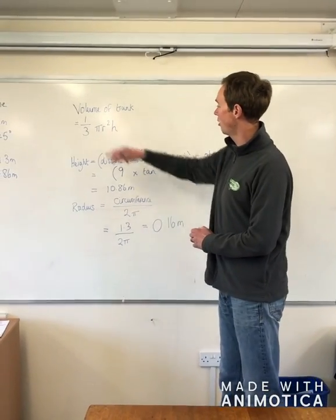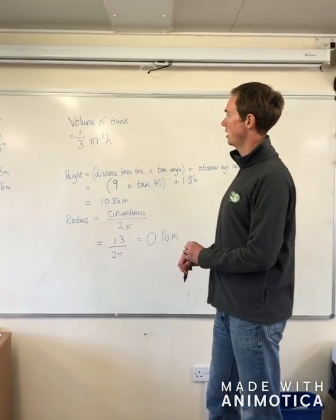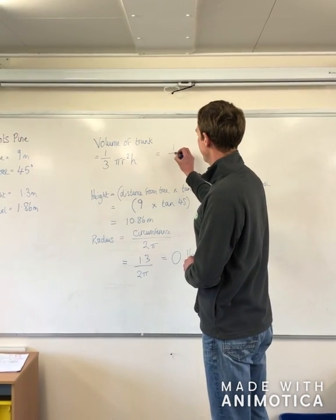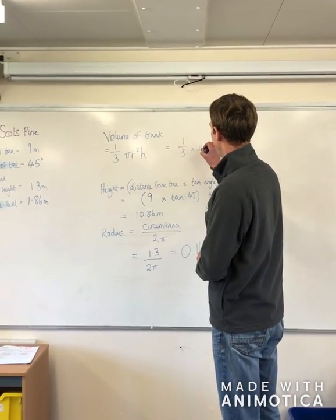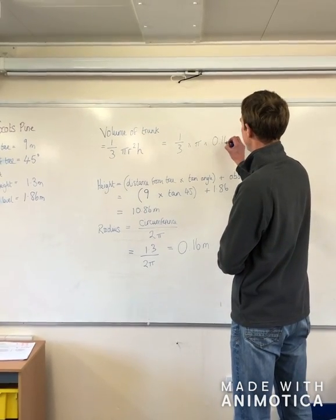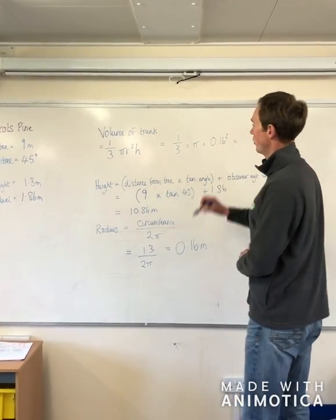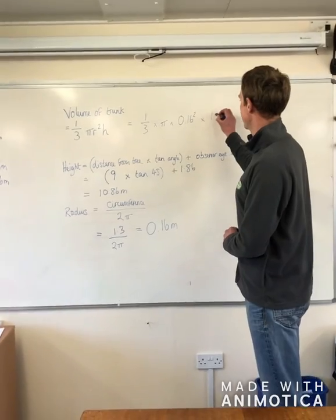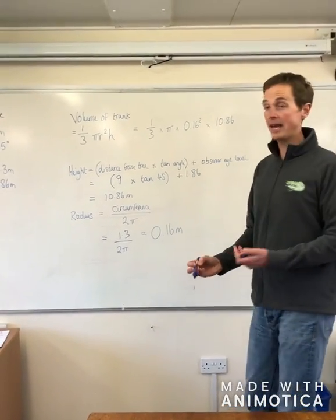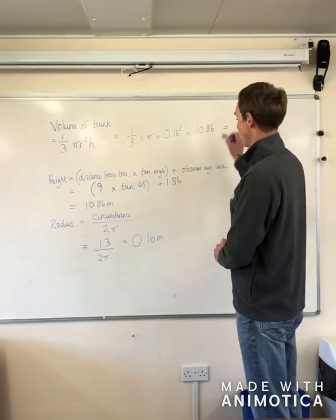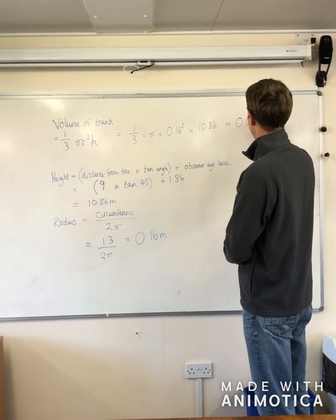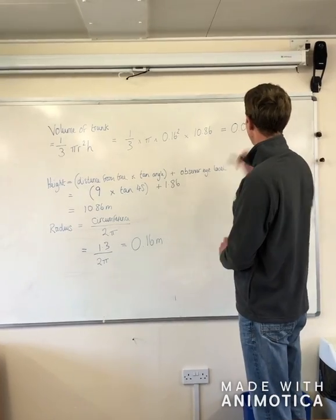Now we've got our r, our radius, and we've got our h, our height. So we're going to plug that in: one-third times pi times our radius squared — so that's 0.16 squared — and then multiplying by height, which is 10.86. Plugging that into a calculator, the volume then comes out as 0.09 metres cubed.